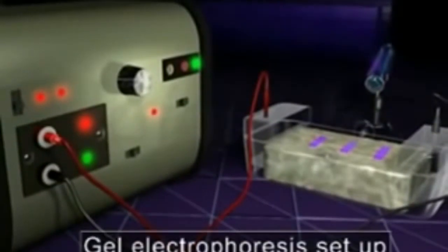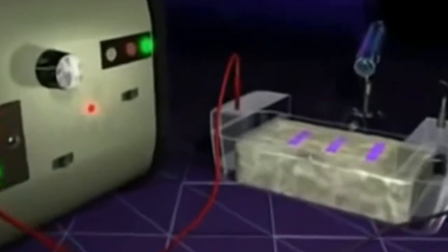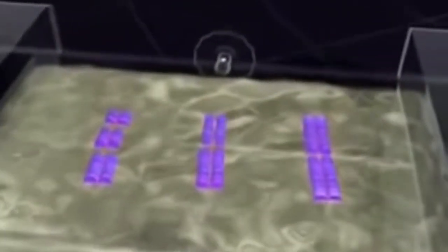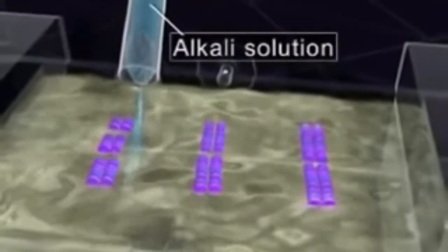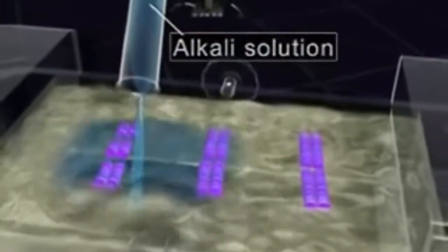Double-stranded DNA is now split by alkaline solution. The separated DNA fragments can be seen by staining under UV radiation.